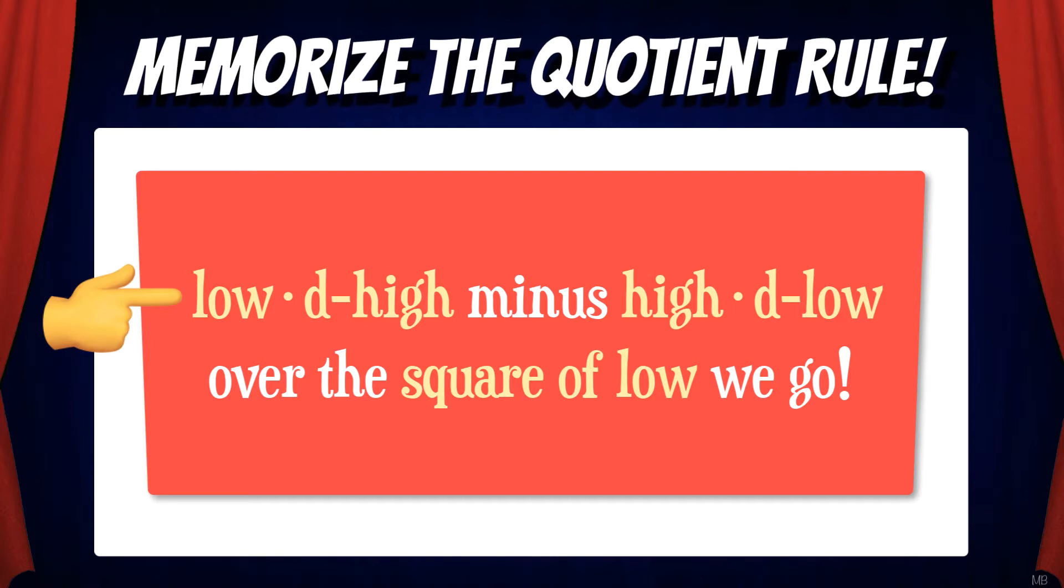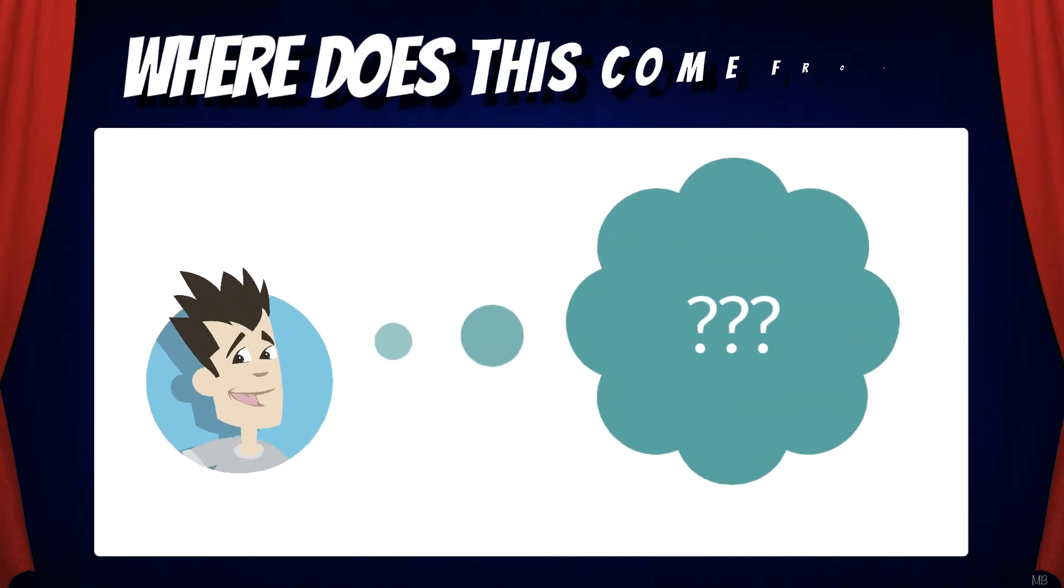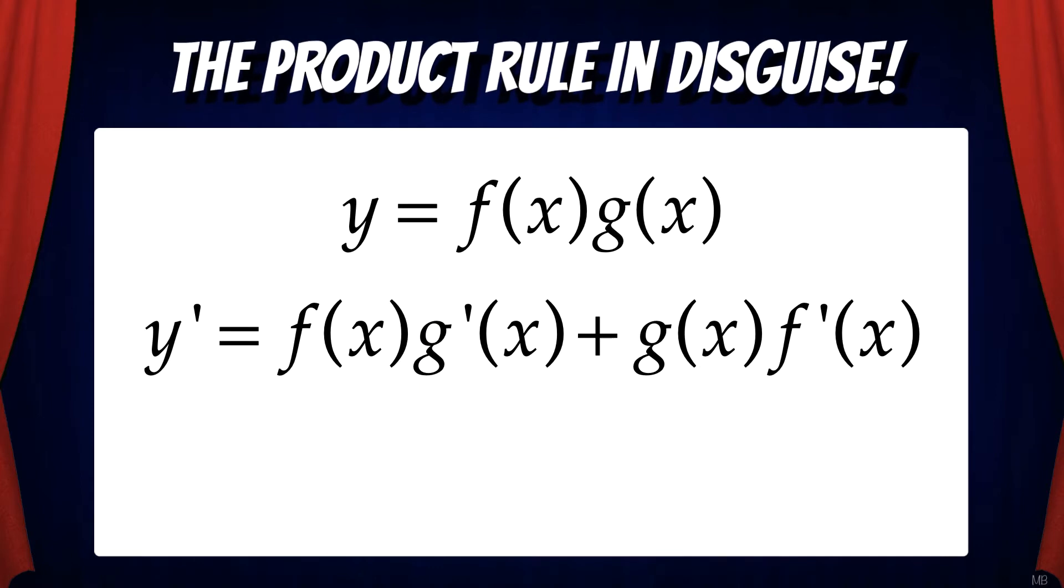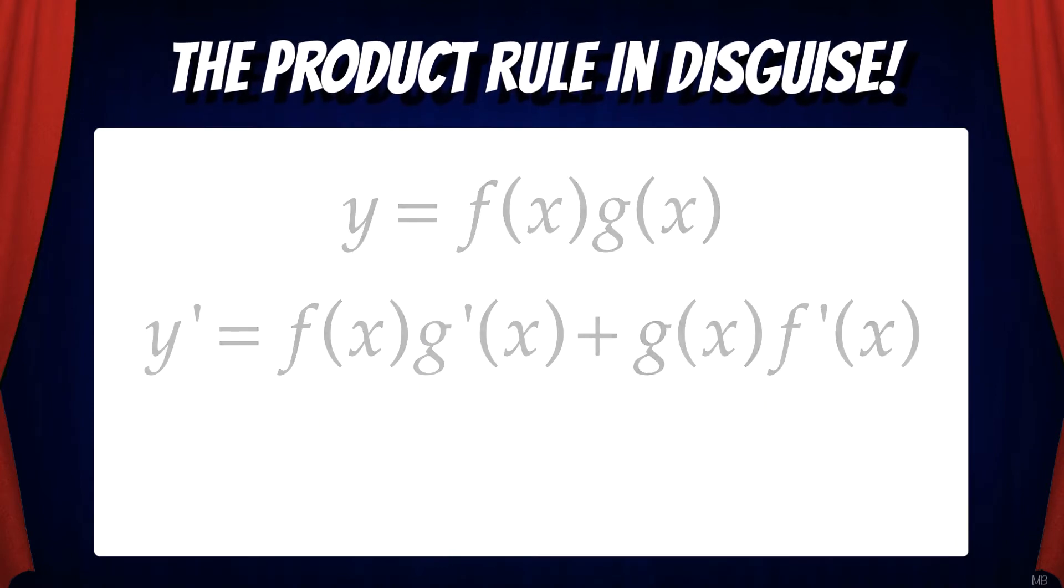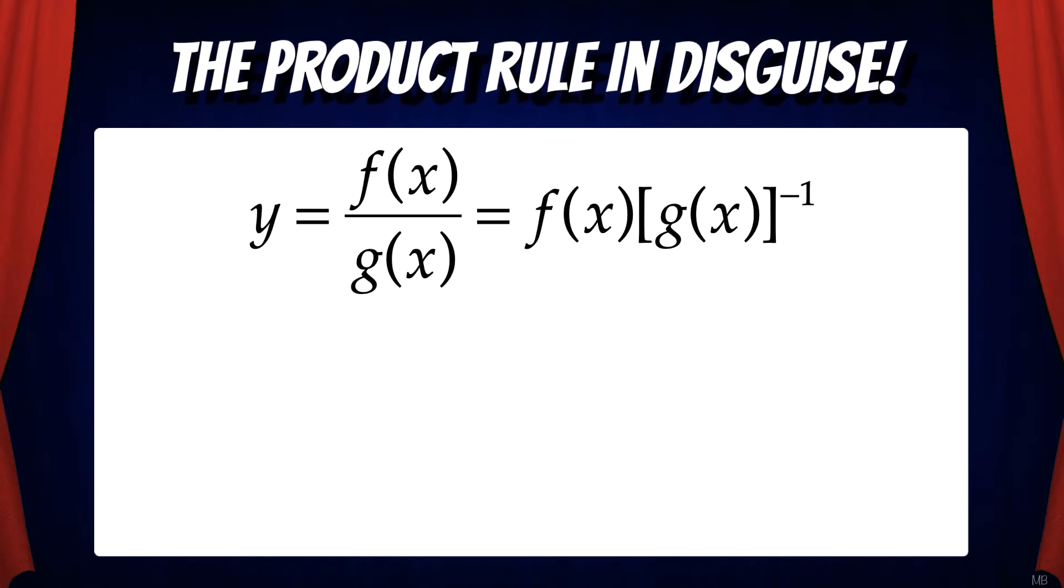Repeat it to yourself a few times: low d high minus high d low over the square of low we go. But where does this come from? As it turns out, the quotient rule is really just the product rule in disguise. Here's what I mean. We can think of the original function f over g as f times g to the negative 1.